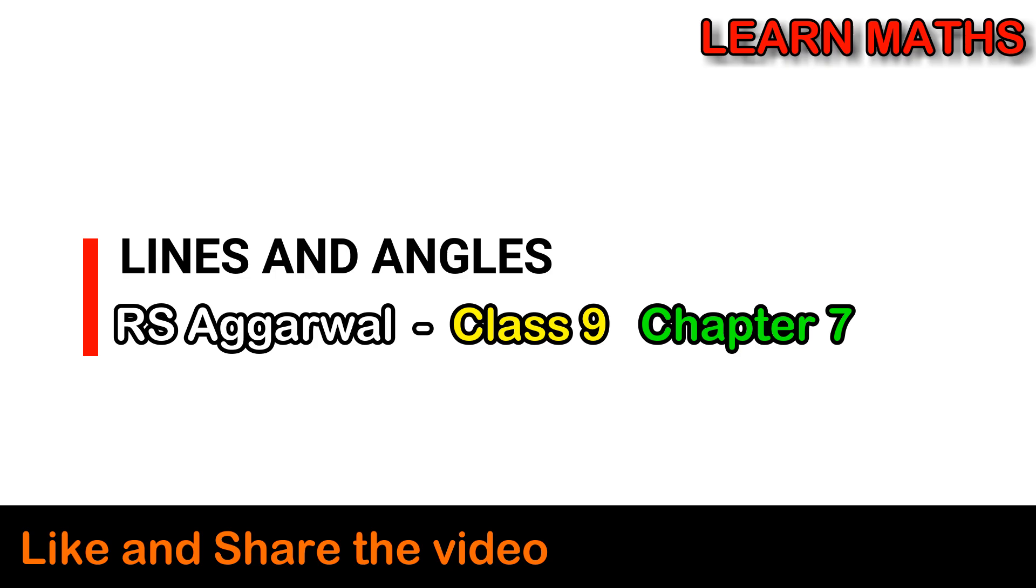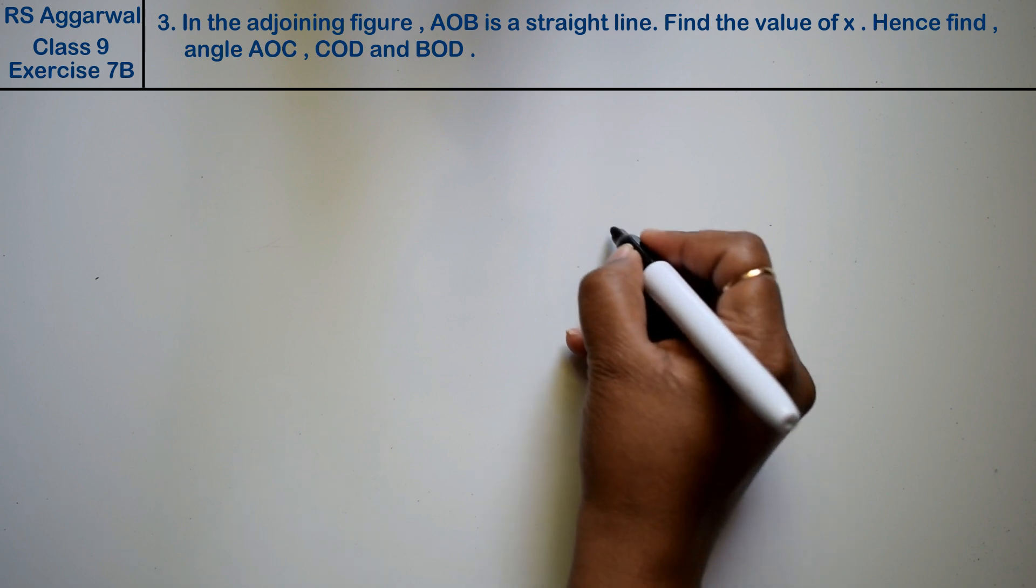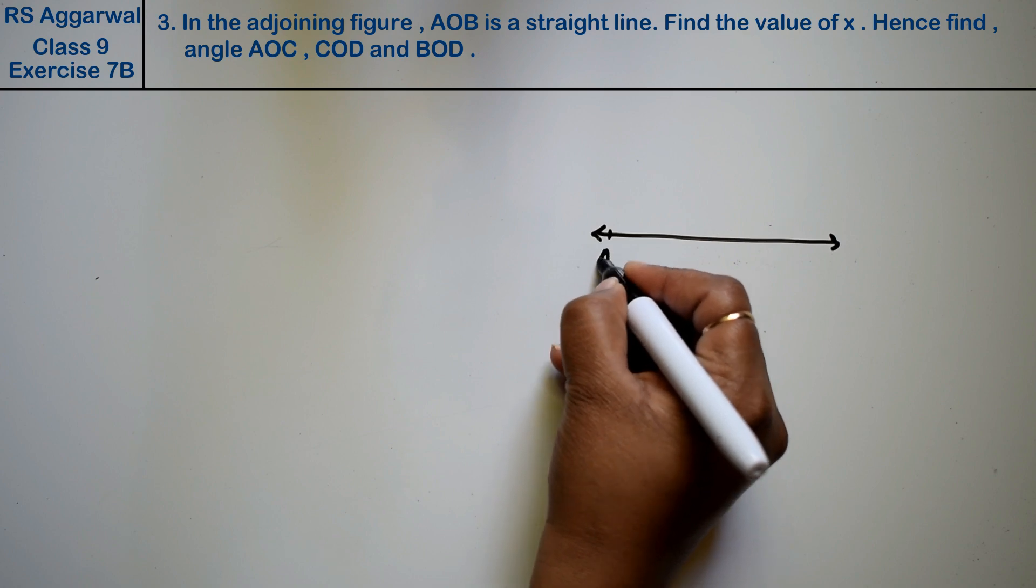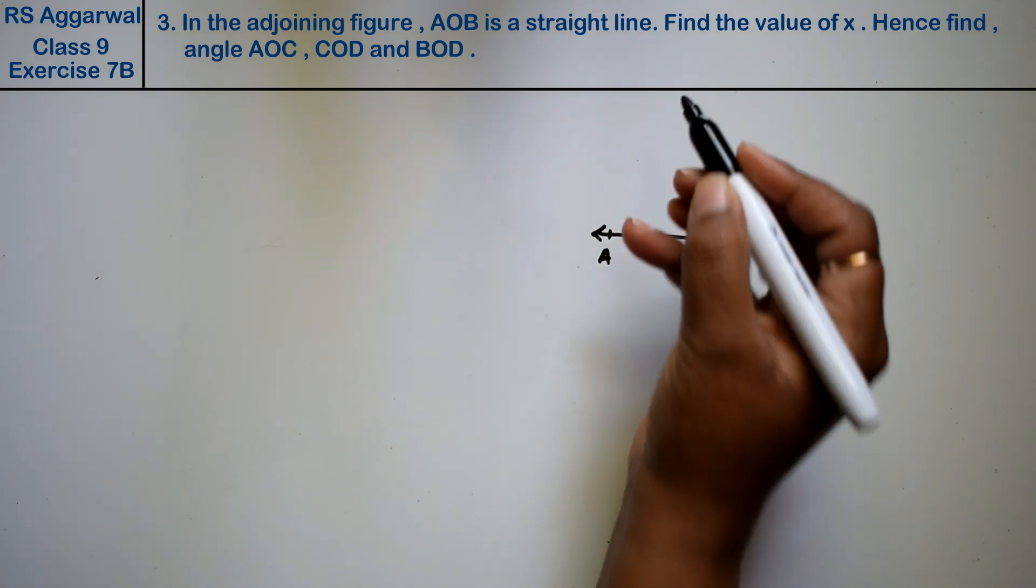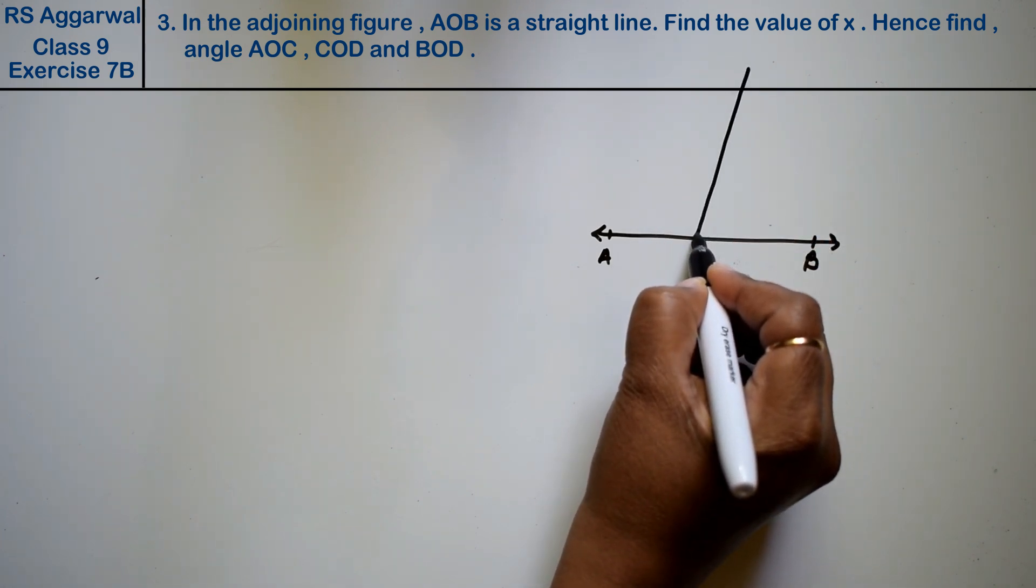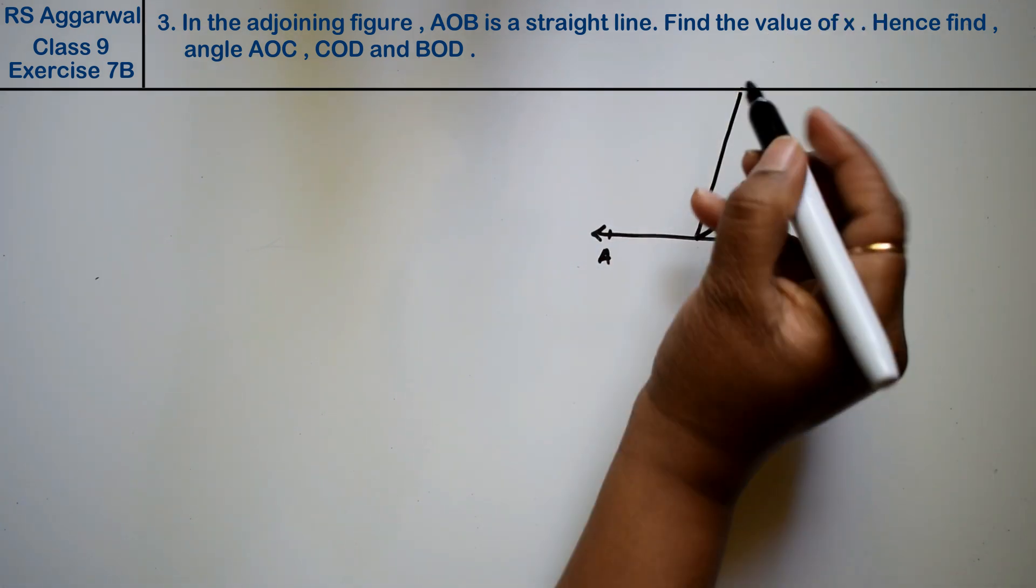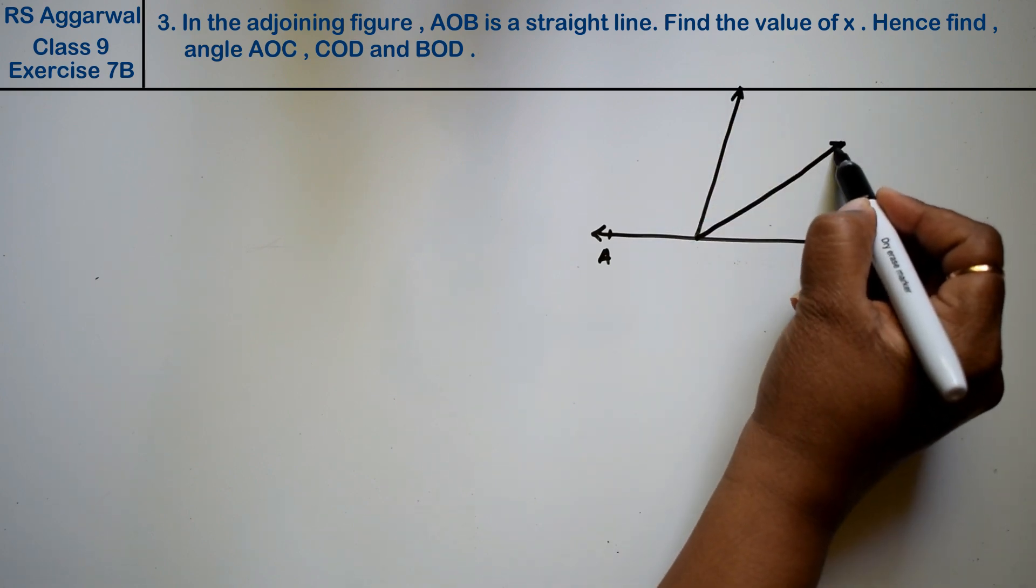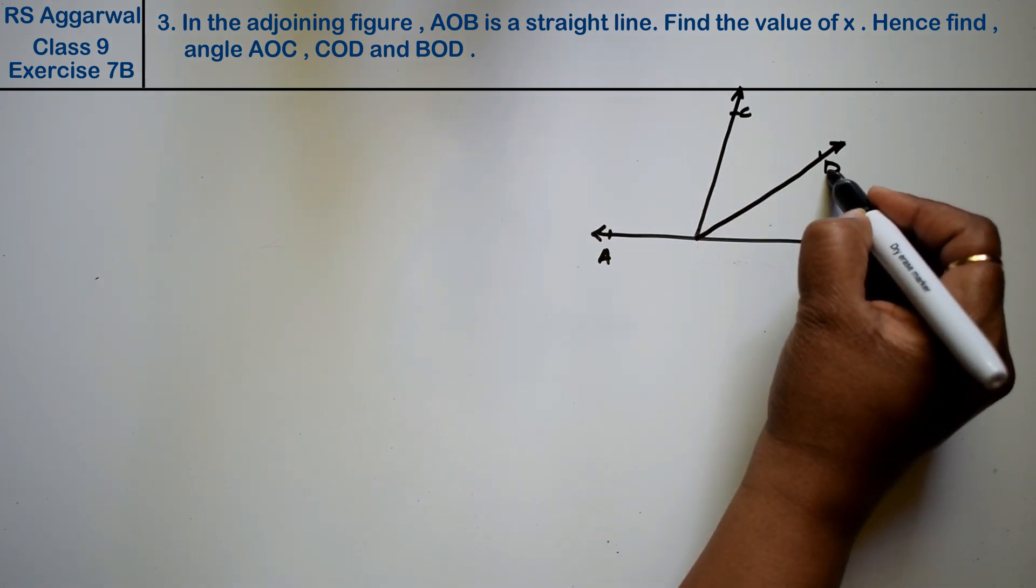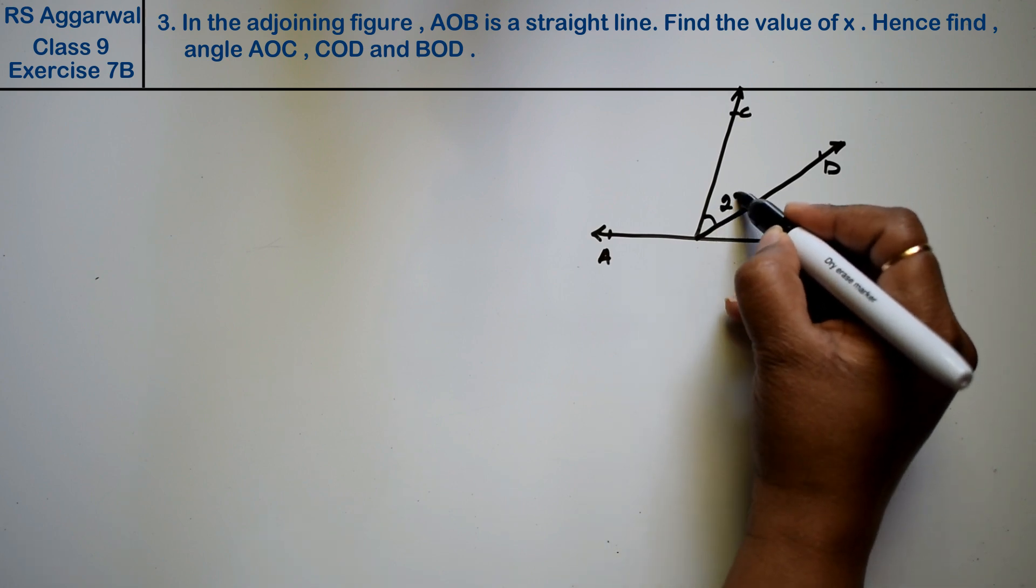Let's do question number 3 of exercise 7B, that is lines and angles. In the adjoining figure, friends, let's make a figure first. This is A and this is B, 90 degrees right.